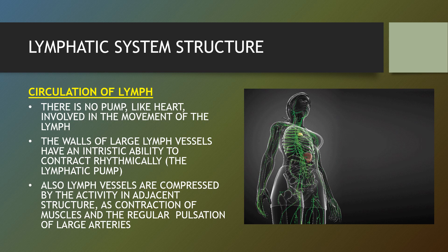Lymph only moves in one direction — towards the heart. There is no pump like a heart involved in the movement of lymph. The walls of large lymph vessels have an intrinsic ability to contract rhythmically, known as the lymphatic pump. Lymph vessels are also compressed by activity in adjacent structures, such as contraction of muscles and the regular pulsation of large arteries.